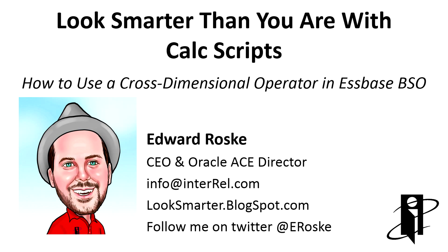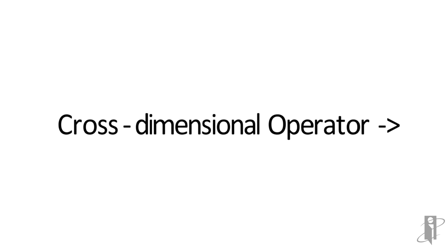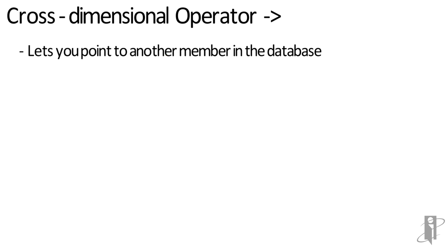In the world of s-based block storage, if you want to write complicated functions or calc scripts, you're going to have to use a cross-dimensional operator. The cross-dimensional operator looks like an arrow, but it's actually just a little dash and a greater-than symbol, and its goal is to point you from one member in the database to another member in the database.